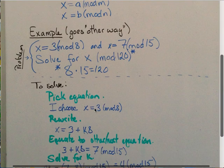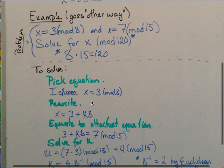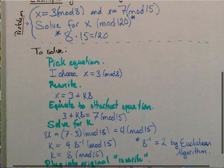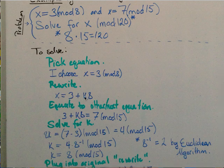To solve, first we pick one of the equations, it doesn't matter which one. I chose x equals 3 mod 8, and we rewrite to x equals 3 plus k8, or k times 8, where k is just some integer constant.